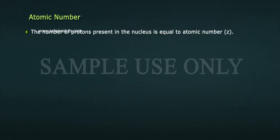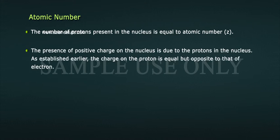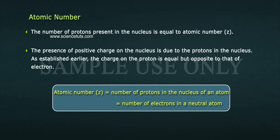The number of protons present in the nucleus is equal to atomic number Z. The presence of positive charge on the nucleus is due to the protons in the nucleus. As established earlier, the charge on the proton is equal but opposite to that of electron. Therefore, atomic number Z is equal to number of protons in the nucleus of an atom, is equal to number of electrons in a neutral atom.